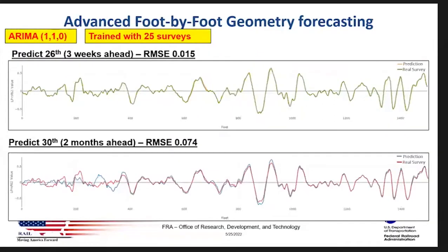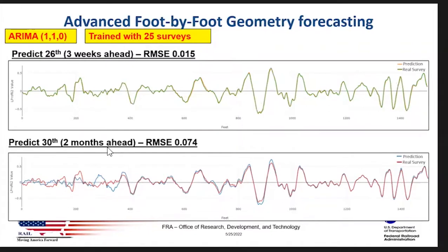Here is an example of the performance. On the top plot we had 25 surveys used as the training set. For these autoregressive models it's like a moving window — you have a set of previous surveys, the algorithm learns the pattern and then predicts forward. Based on 25 previous surveys, we predicted what the geometry would look like and overlaid it with the real survey taken at the same time the prediction was for. For up to about three weeks to a month ahead, the predictions are very good. Obviously when predicting much further ahead, accuracy goes down.